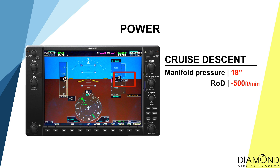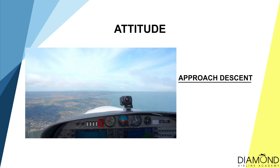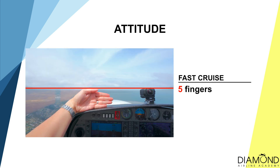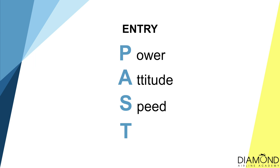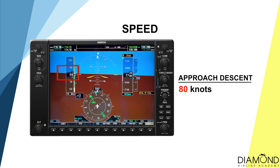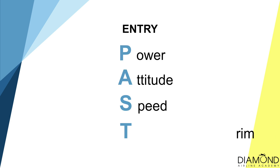A — Attitude: during a glide descent, the correct attitude is about 4 fingers. In an approach descent, the attitude should be around half sky, half ground — meaning the horizon should be roughly in the middle of the windscreen. For a cruise descent, the correct attitude is 5 fingers. S — Speed: during a glide descent speed should settle at 70 knots; during an approach descent around 80 knots; during a cruise descent around 110 to 120 knots. T — Trim: use trim until you can let go of the control stick and the plane maintains the correct attitude steadily by itself.